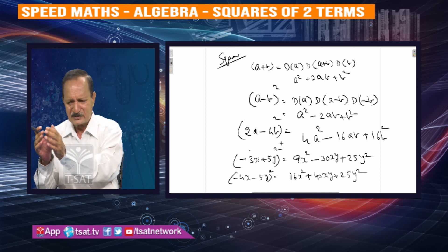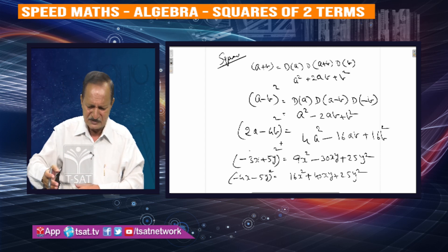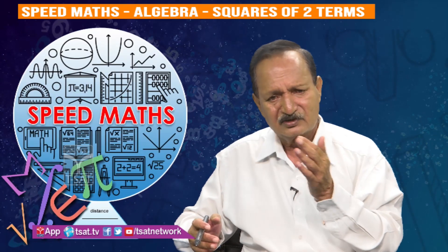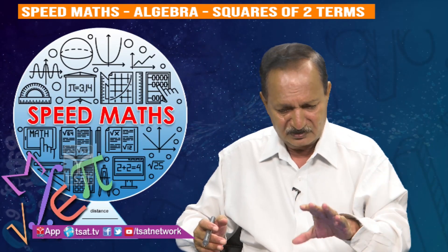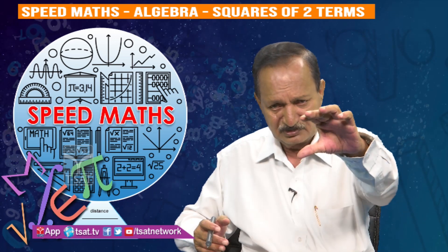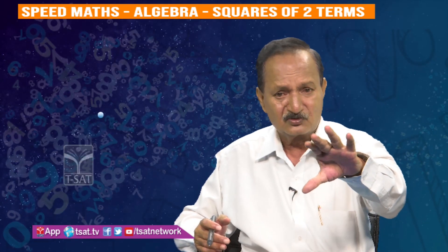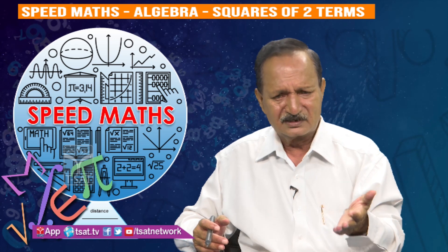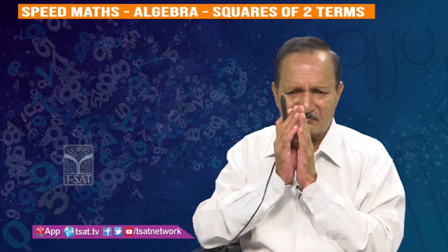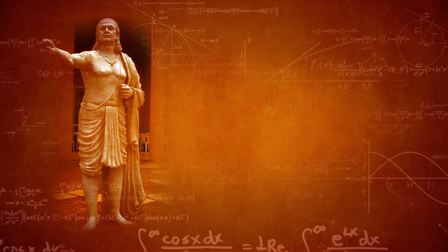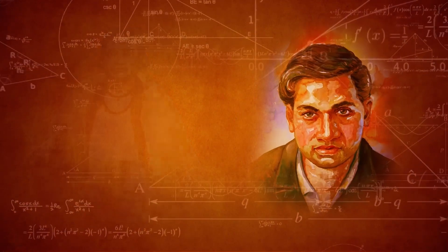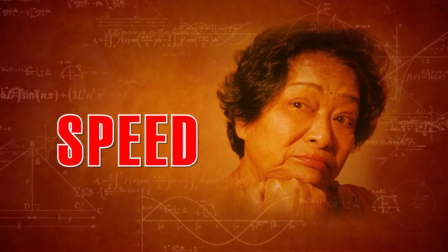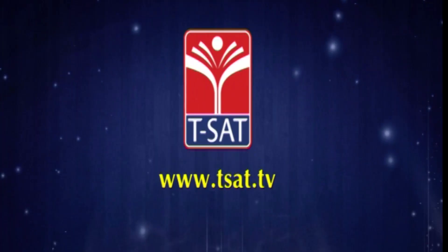There is X cube, there is X square — for two digits, three digits, we can apply it continuously, ongoing, we can do it. Thank you.